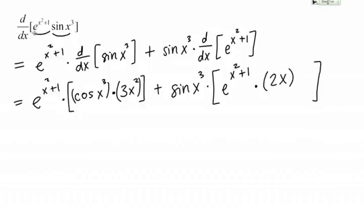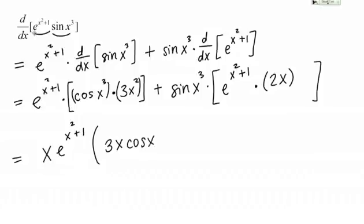Now I'm completely finished taking the derivatives. I might want to clean this up a little. Looking for common factors in both terms: they both have a factor of x, and they both have a factor of e to the x squared plus 1. I'll pull those out in front. From the first term, after taking out e to the x squared plus 1 and one x, I have 3x left over and cosine of x cubed. From the second term, after taking out x and e, I just have 2 sine of x cubed. And this is my answer.